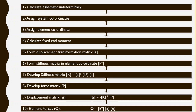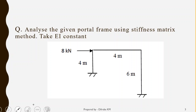These are the 10 steps that you should follow in order to analyze a frame structure using the stiffness method. The first step is to calculate kinematic indeterminacy, then assign the system coordinates, then assign element coordinates. After that, calculate fixed end moment and form the displacement transformation matrix. The sixth step is to form element stiffness matrix K star, then on the seventh step develop the stiffness matrix using the equation K equals A transpose into K star into A. Then we will develop a force matrix and a displacement matrix, and finally the last step is to calculate element forces.